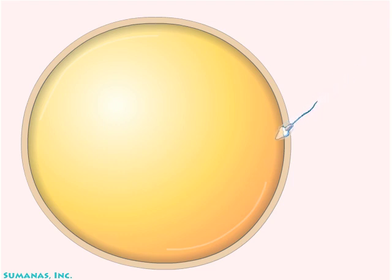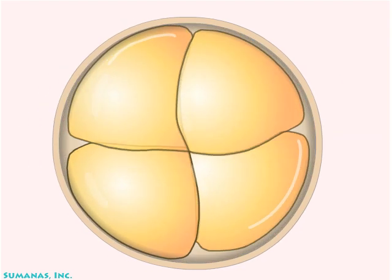When fertilization is successful, the sperm head bearing the nucleus enters the egg, while the tail is left behind. The fertilized egg divides first into two cells, then into four.